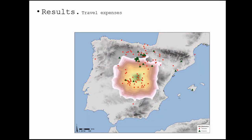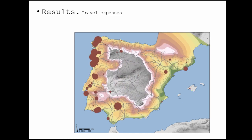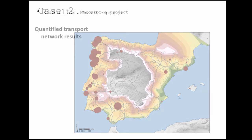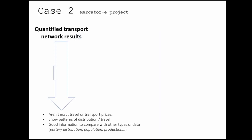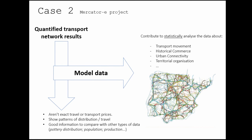Or we can compare them with the distribution of certain products. This is the production of one kind of pottery in the center of Spain, and you can see the distribution. And we can compare them with the production of olive oil from the south of Spain and its distribution around the peninsula. The idea of this project is to begin working with quantified data that allows us to make some kind of statistical comparisons or analysis between different kinds of information, and try to analyze how these territories were organized over different time periods.